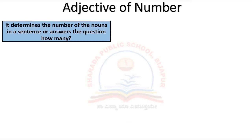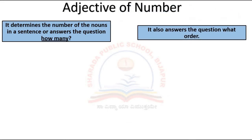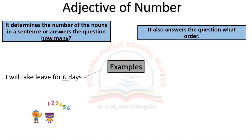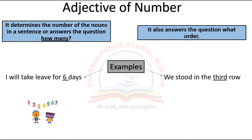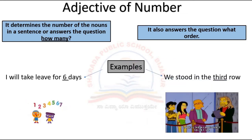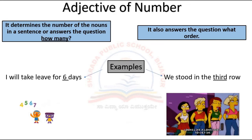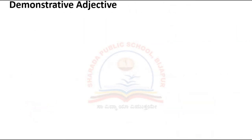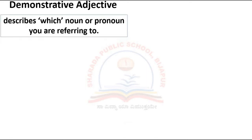Adjective of number determines the number of nouns in a sentence, answering 'how many' or 'what order.' Example: 'I will take leave for six days' — here 'six' is the adjective of number. Similarly, 'We stood in the third row' — here 'third' is the adjective of number.